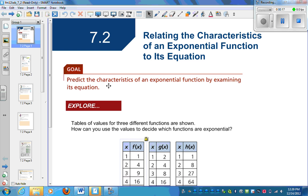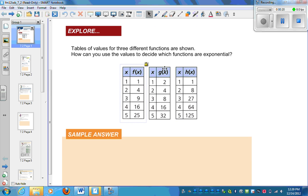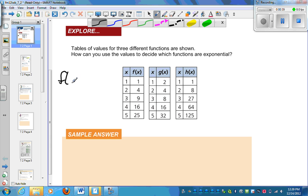We alluded to some of this in 7.1. Look at these three different functions. Which ones are exponential? Looking at this one, 1 goes to 1, 2 goes to 4, 3 goes to 9, 4 to 16, 5 to 25. These are all perfect squares. So the equation is really just f(x) equals x squared. That is not exponential. By definition, exponential means that the variable is in the exponent.